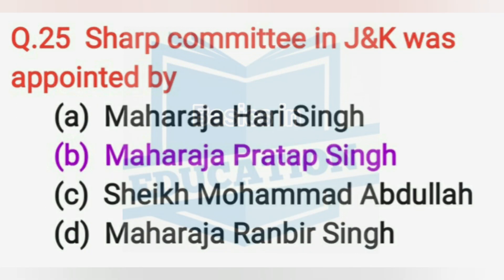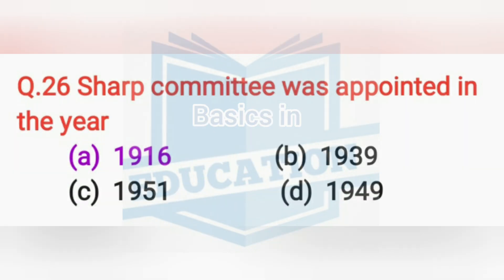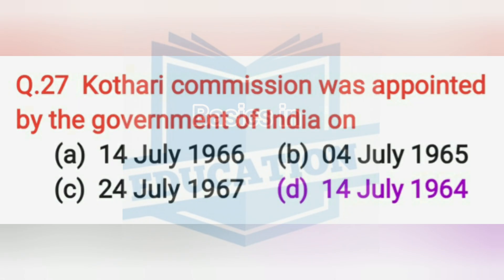The Sharap Committee in J&K was appointed by Maharaja Pratap Singh in the year 1916. The Kothari Commission was appointed by the Government of India on 14th July 1964.